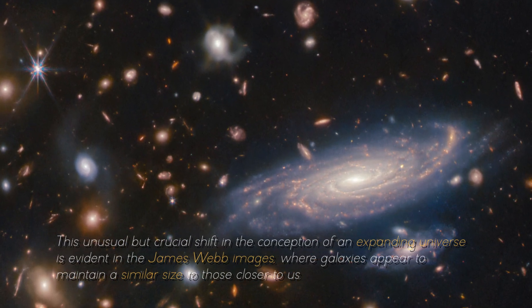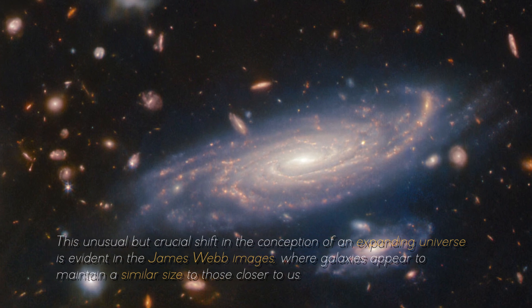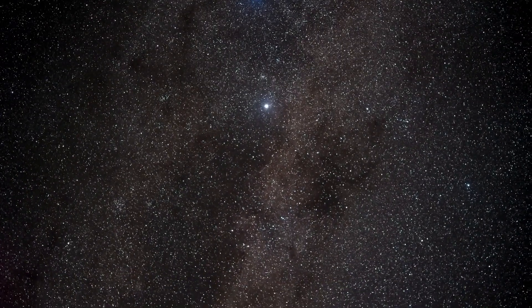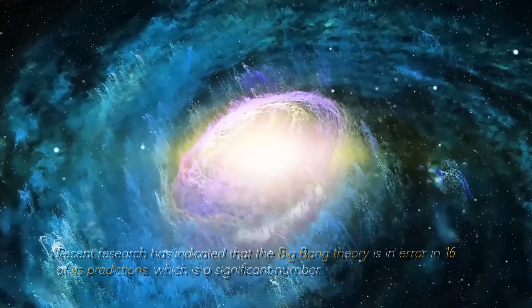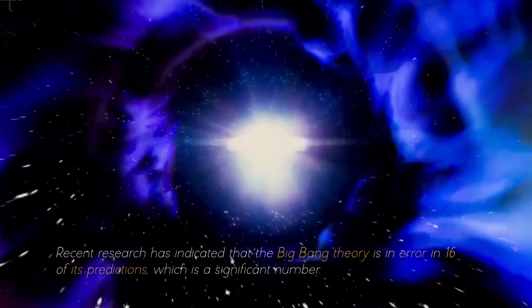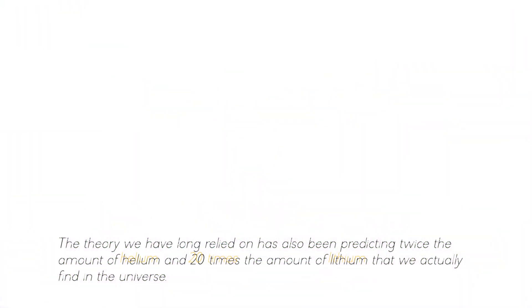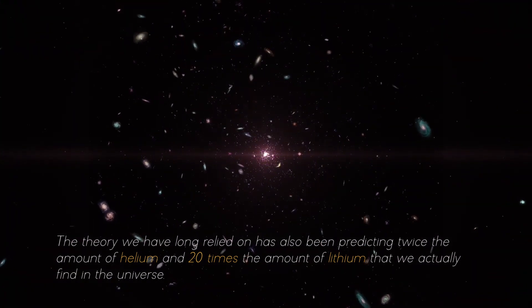This unusual but crucial shift in the conceptions of an expanding universe is evident in the James Webb images, where galaxies appear to maintain a similar size to those closer to us. In reality, the conventional theory may be making several mistakes, surprising as it may seem. Recent research has indicated that the Big Bang theory is in error in 16 of its predictions, which is a significant number. The only prediction that is accurately verified concerned the abundance of deuterium, a type of hydrogen. But that is only the beginning. The theory we have long relied on has also been predicting twice the amount of helium and 20 times the amount of lithium that we actually find in the universe.